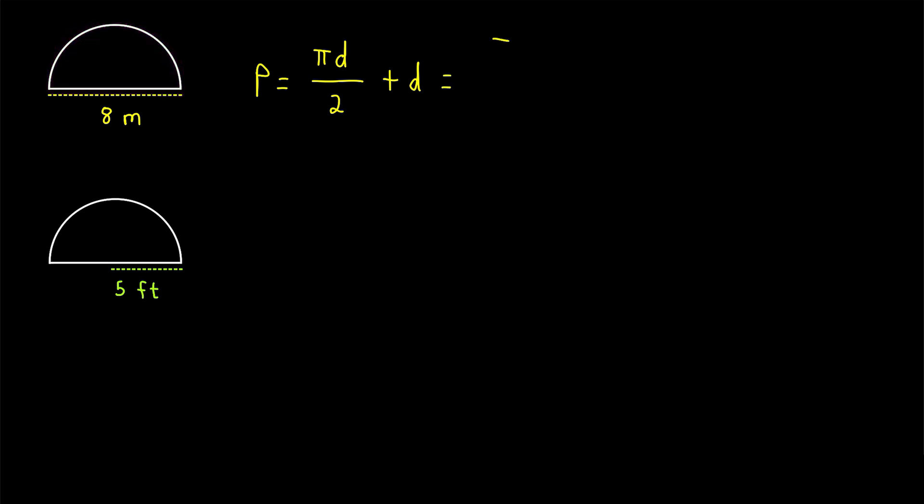It's going to be pi times d, so pi times 8 meters divided by 2, and then plus the diameter, so plus another 8 meters. 8 over 2 is 4, so this is 4 pi meters plus 8 meters. So that's 4 pi plus 8 meters. That is our exact answer. That is the perimeter of this semicircle.